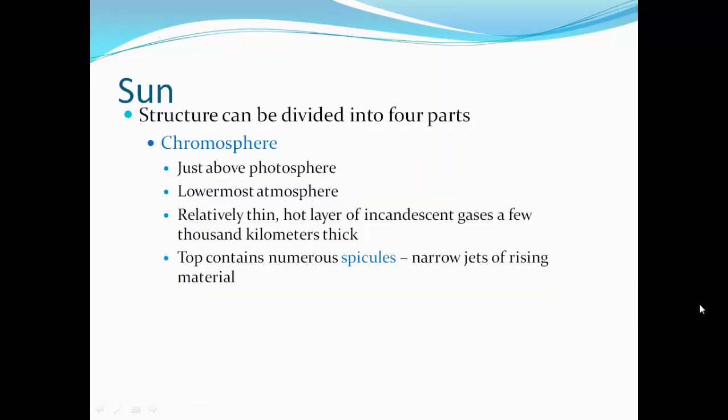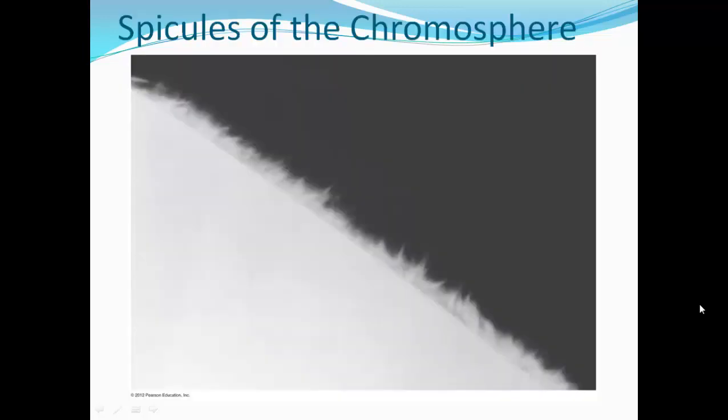The chromosphere is just above the photosphere—the lowermost atmosphere of the sun. It's relatively thin, a hot layer of incandescent gases, a few thousand kilometers thick. The topmost features are spicules, narrow jets of rising material.